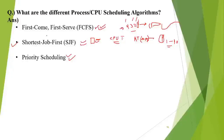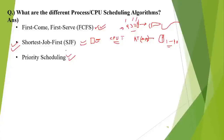Shortest Job First can be preemptive. For example, suppose two processes enter the system at the same time — one taking 5 milliseconds and another taking 2 milliseconds. The 2-millisecond process gets the CPU. If a third process arrives requiring only 1 millisecond, in preemptive SJF the third process will preempt the 2-millisecond process and get the CPU, since it is the shortest job.